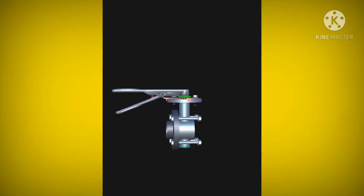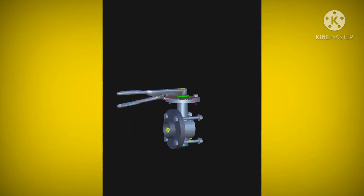The butterfly is a metal disc mounted on a rod. When the valve is closed, the disc is turned so that it completely blocks off the passageway.